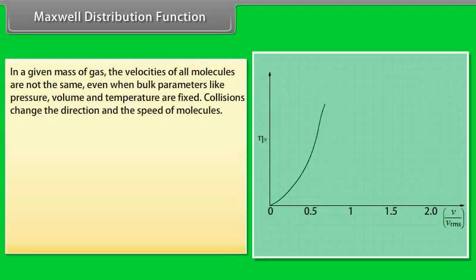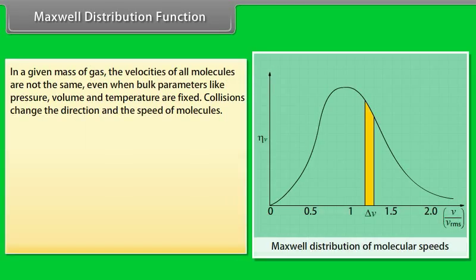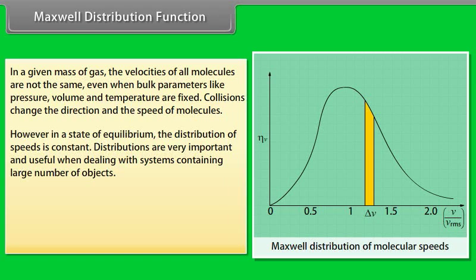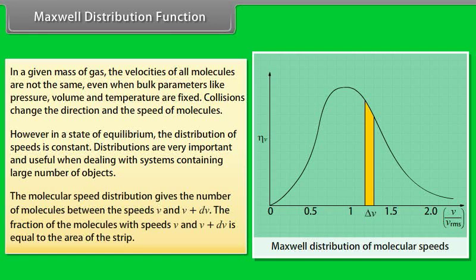In a given mass of gas, the velocities of all molecules are not the same even when bulk parameters like pressure, volume and temperature are fixed. Collisions change the direction and the speed of molecules. However, in a state of equilibrium, the distribution of speed is constant. Distributions are very important and useful when dealing with systems containing large number of objects. The molecular speed distribution gives the number of molecules between the speeds V and V plus DV. The fraction of the molecules with speeds V and V plus DV is equal to the area of the strip.